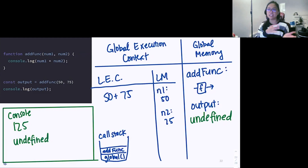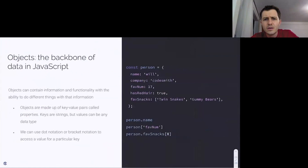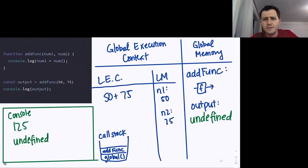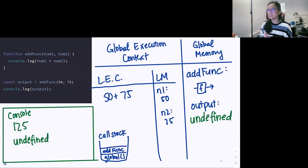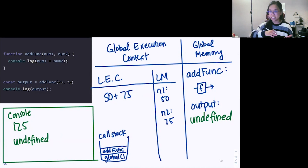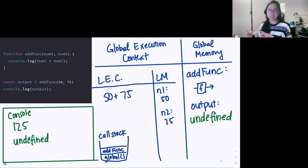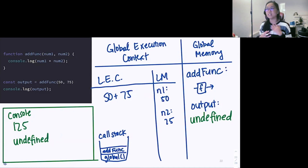This is how our console log works — it's different from our return because console log just shows it on our console, while return actually provides that value to our function. A great question came in: why would we want to console log a function that has a return command? As mentioned, it's important for debugging. We want to console log throughout our function to see if it's working the way we want it to — to see if we're moving through it the way we want. If we had a super long function not giving us output, we could see where we're blocked, where we're not entering some parts, or where we're not getting our data the way we want.